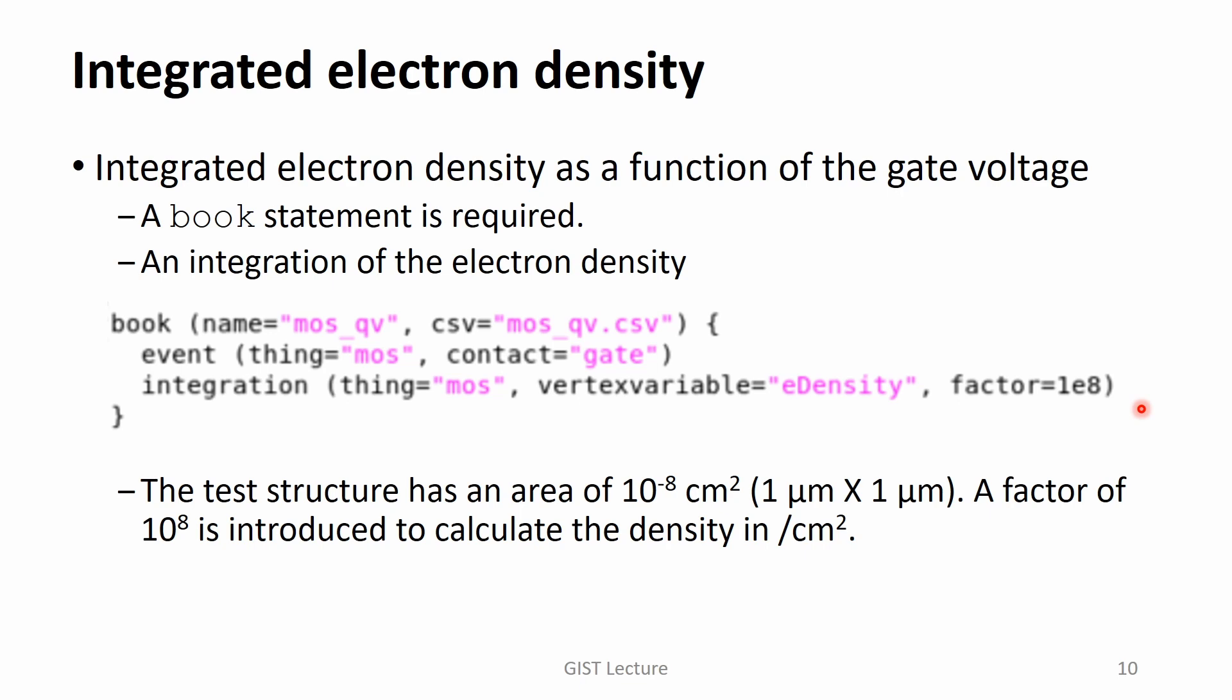Here, we can find an argument factor. The test structure has an area of 1 micrometer by 1 micrometer. In other words, it has an area of 10 to the minus 8 square centimeter. The integration itself gives us the integrated electron density per 10 to the minus 8 square centimeter. However, usually we want to express the integrated electron density in per square centimeter. A factor of 10 to the 8 is introduced.